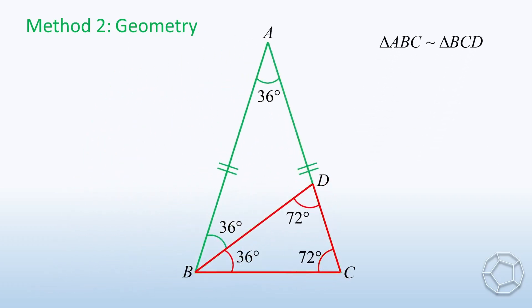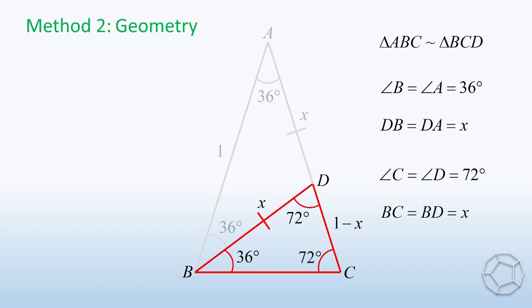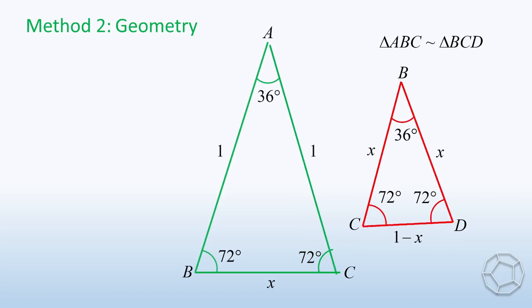Let's move on to the lengths. Suppose AB is equal to AC equals to 1. Let AD equals to X, so CD is equal to 1 minus X. In the purple triangle, because angle B is equal to angle A, so DB is equal to DA, which is X. We do the same for the red triangle. Again, because angle C is equal to angle D, so BC is equal to X. Now, we can make use of ratio of sides of similar triangles.